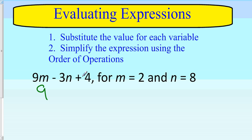I see m equals 2, so instead of writing 9 times m, I'll write 9 times 2. Minus 3, and instead of 3 times n, I'll write 3 times 8 because n equals 8. Then I'll add 4.